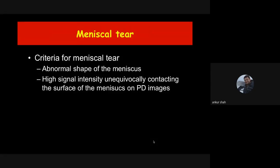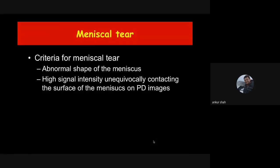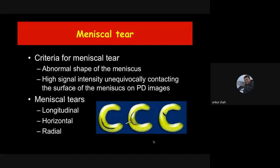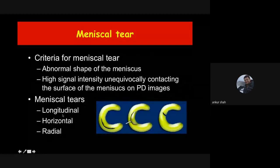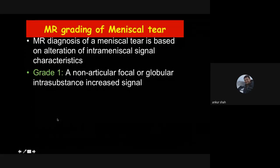The criteria for meniscal tear are two: abnormality of shape of the meniscus, and abnormality of signal intensity of the meniscus. Abnormality of shape is much more reliable than abnormality of signal intensity, because signal intensity can be very non-specific. Tears can be basically horizontal or vertical (either longitudinal or radial), and a complex tear is a combination of different types. How do we grade the meniscal tear?